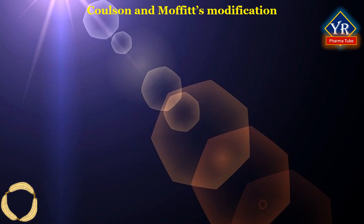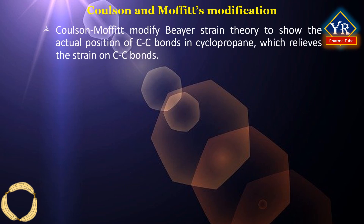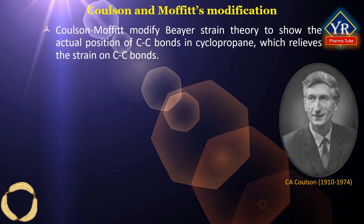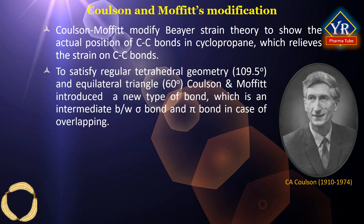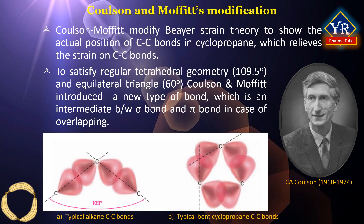Coulson and Moffitt's modification. Coulson and Moffitt modified the Bayer's strain theory to show the actual position of carbon-carbon bonds in cyclopropane, which somewhat relieves the strain on carbon-carbon bonds. To satisfy regular tetrahedral geometry — that is 109.5 degrees — and equilateral triangle — that is 60 degrees — in cyclopropane, Coulson and Moffitt introduced a new type of bond called the bent bond, which is an intermediate between sigma bond and pi bond in terms of overlapping.